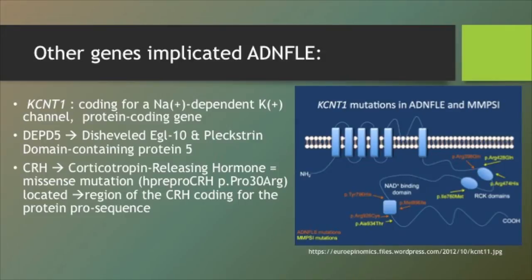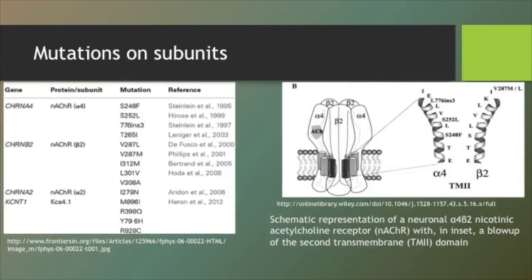There are mutations on other genes that can cause ADNFLE. The first is KCNT1, which codes for the sodium-dependent potassium channel and protein coding gene. The second is DEPDC5, and the third is CHRNA2, which is caused by a missense mutation located in the region of CHRNA2 coding for the protein sequence. The table on the left shows the mutations that can be present on the alpha 4 or beta 2 subunits as well as KCNT1.